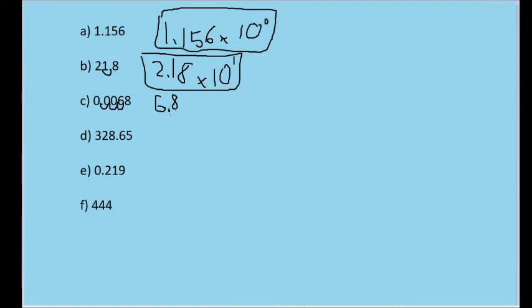Since we increased the coefficient by an order of magnitude of 3, then the power of 10 should move its order of magnitude back down 3. So the full value becomes 6.8 times 10 to the negative 3.